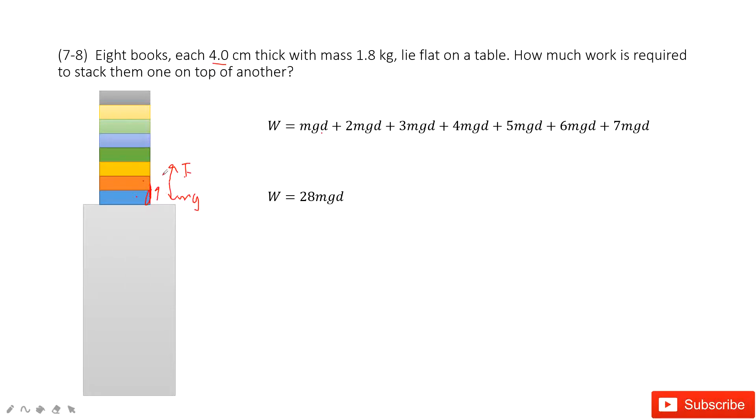Each time the force the person acts on the book equals the gravity mg. The first book, the work is mgd. The second becomes 2mgd, then 3mgd, 4mgd, 5mgd, 6mgd, 7mgd. Add them together to get 28mgd.